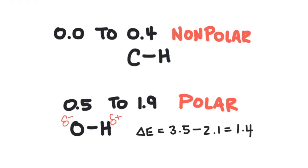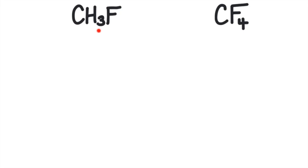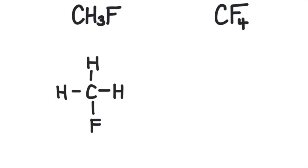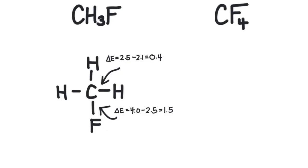A molecule could have polar bonds but be non-polar overall. To be polar, the molecule must have an overall dipole. A dipole means that there's a separation of charge — one side of the molecule will have a slightly negative charge and the other side will have a slightly positive charge. Here's an example of a polar molecule. The carbon and hydrogen bond will be non-polar because the difference in electronegativity is 0.4. The carbon and fluorine bond, however, will be a polar bond based on its difference in electronegativity. There will be a delta negative on the fluorine and a delta positive on the carbon.